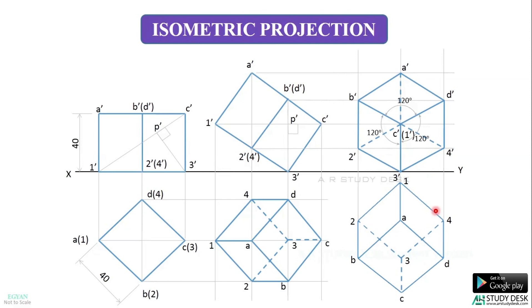Here at AIR StudyDesk, we will name these axes as L, B, and H for the ease of doing the problems. In isometric projection, the lengths parallel to these isometric axes get reduced to 82% of the actual length — it is actually 81.6%, but we round off to 82%. So, if the actual length of the side of this cube was 40, in isometric projection it will get reduced to 82% of 40, and we call that ISO 40.